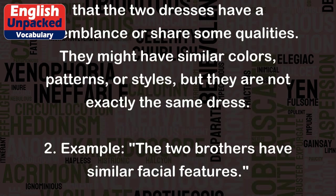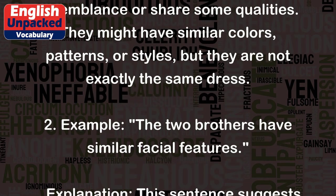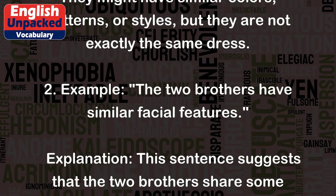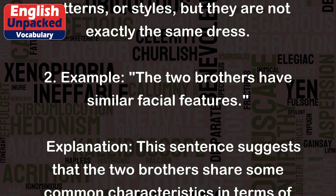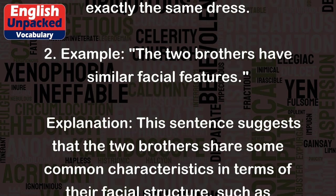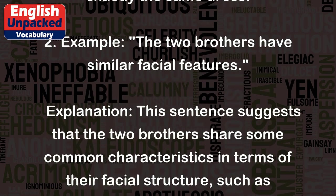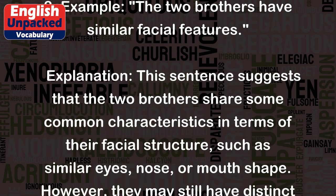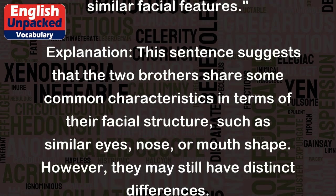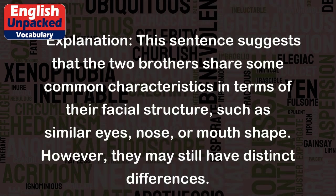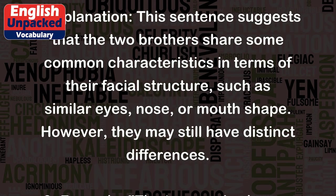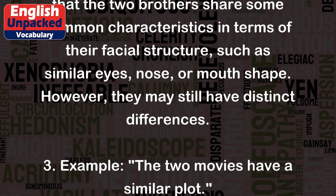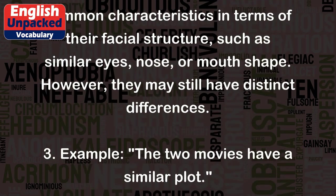Example two: The two brothers have similar facial features. This sentence suggests that the two brothers share some common characteristics in terms of their facial structure, such as similar eyes, nose, or mouth shape. However, they may still have distinct differences.